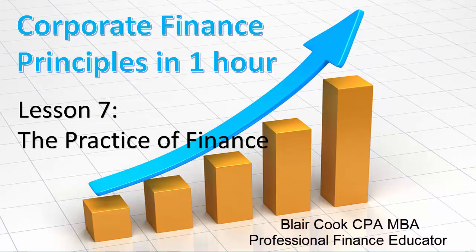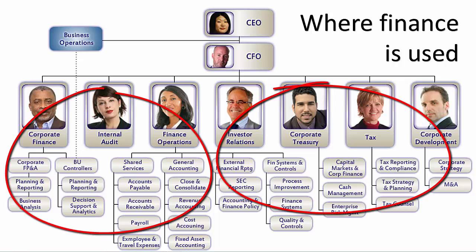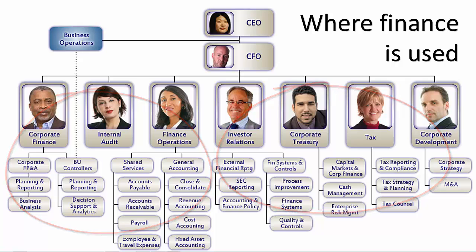In this, our final lesson, we look at where finance theory gets applied in practice in your typical organization. Let's use this depiction on your screen to represent the finance function of an organization. In small, owner-managed organizations, finance may be embodied in one or two individuals. In a large organization, these roles are separate and distinct. But regardless of the size of the entity, each of the functions we discuss in this lesson will be covered by one or more people working inside the office of the CFO.